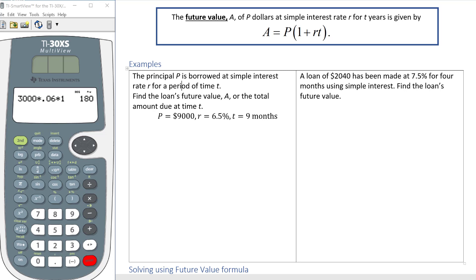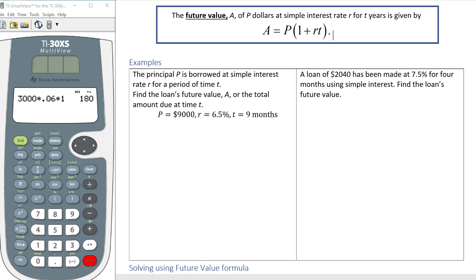Now T is a little bit tricky. Remember time needs to be in years. So 9 months is not an okay way of writing time. So T is equal to 9 months, but we need our T to be in years. So the first thing I need to do is convert 9 months into years.